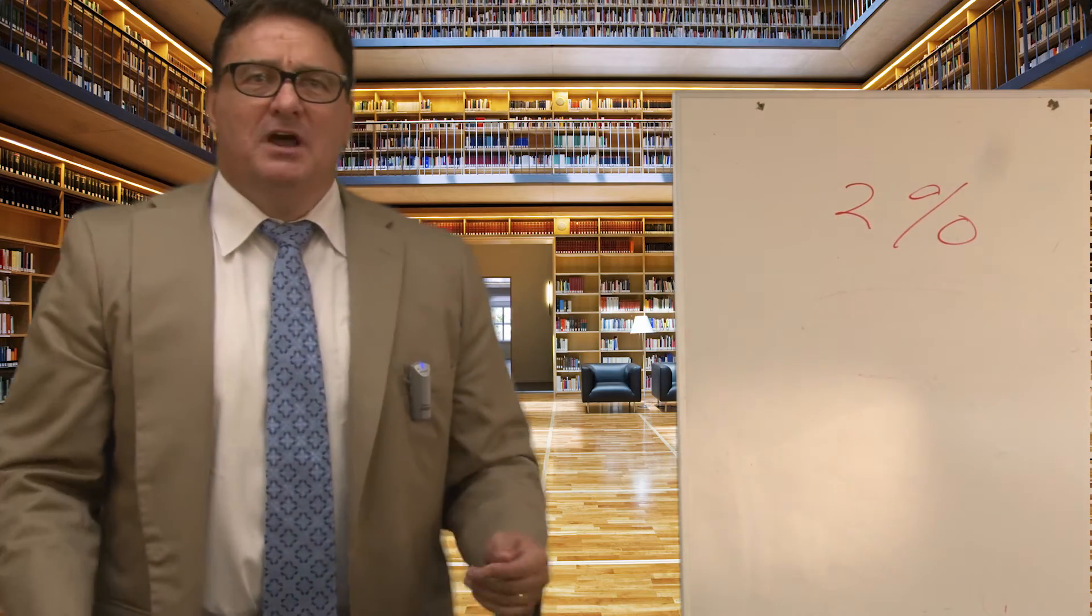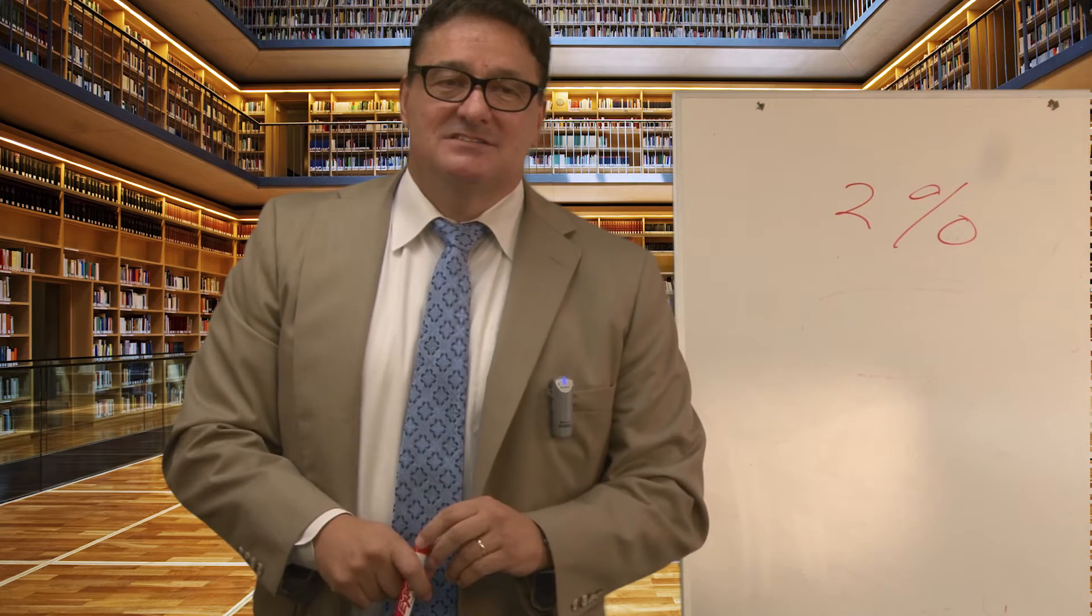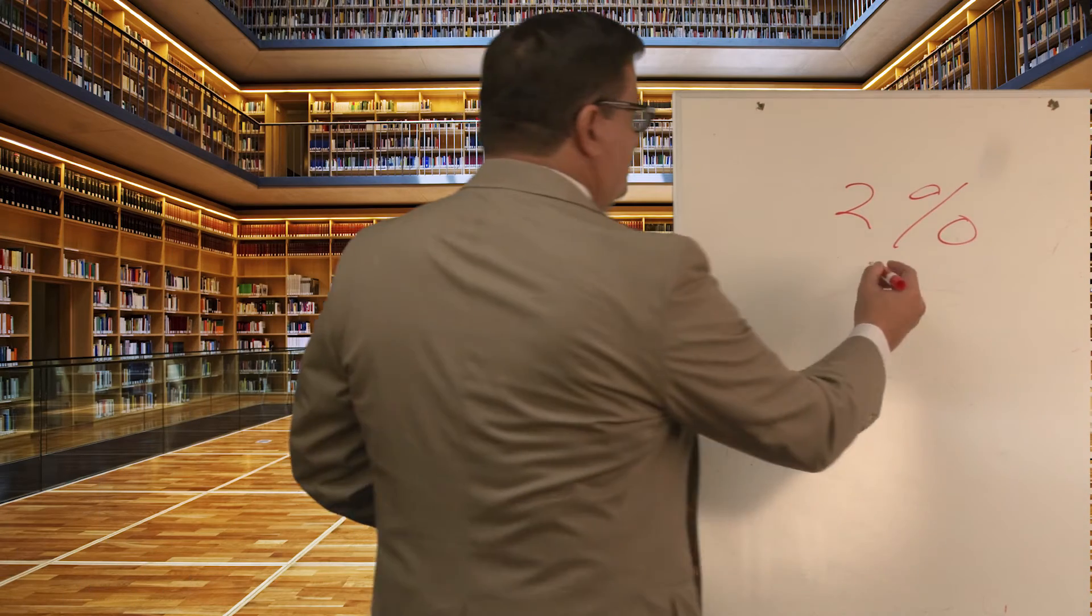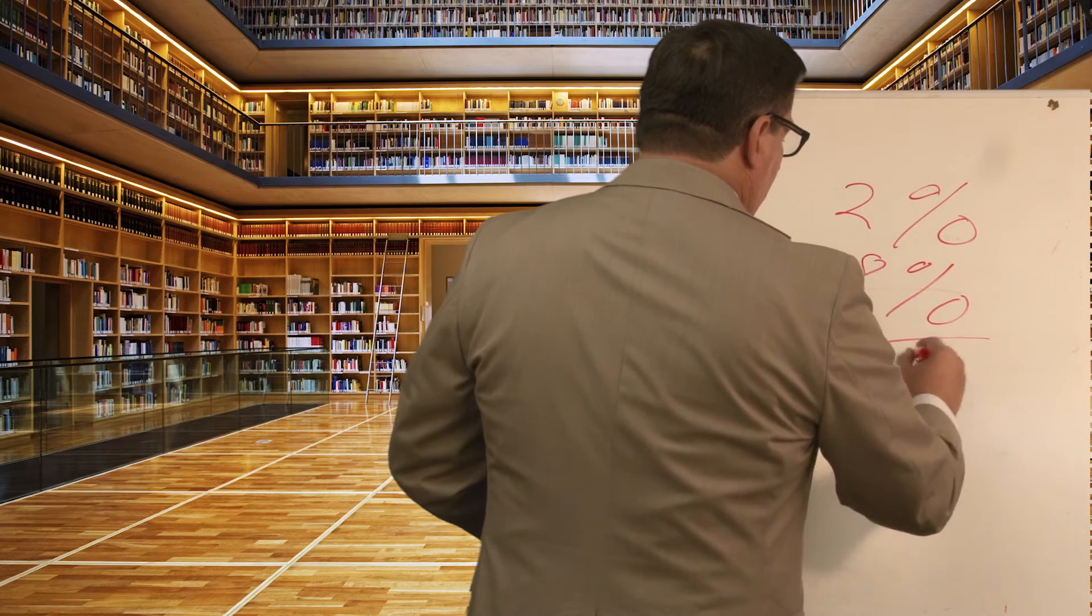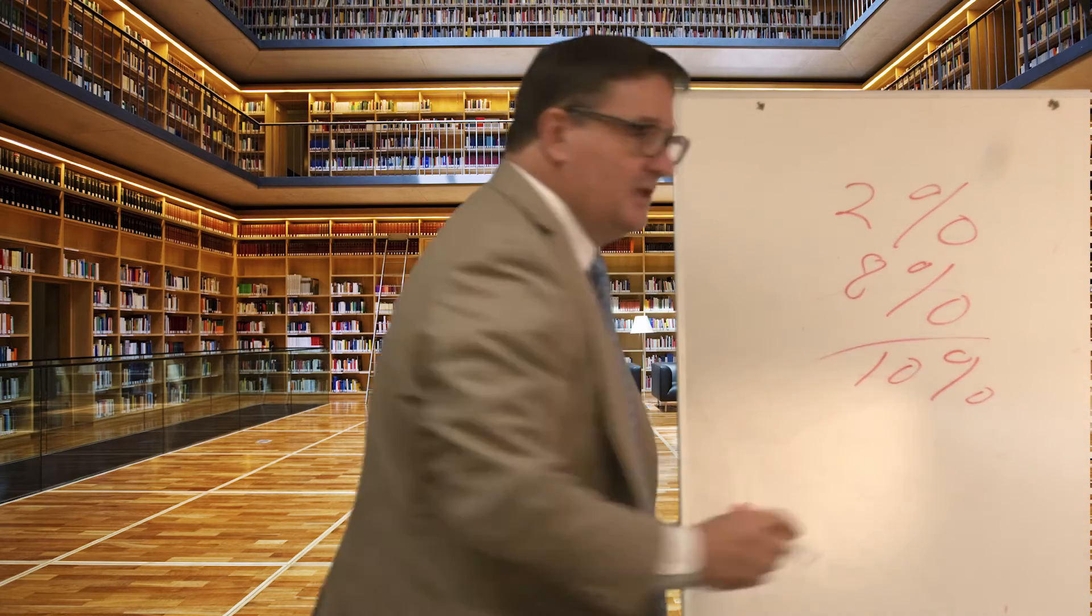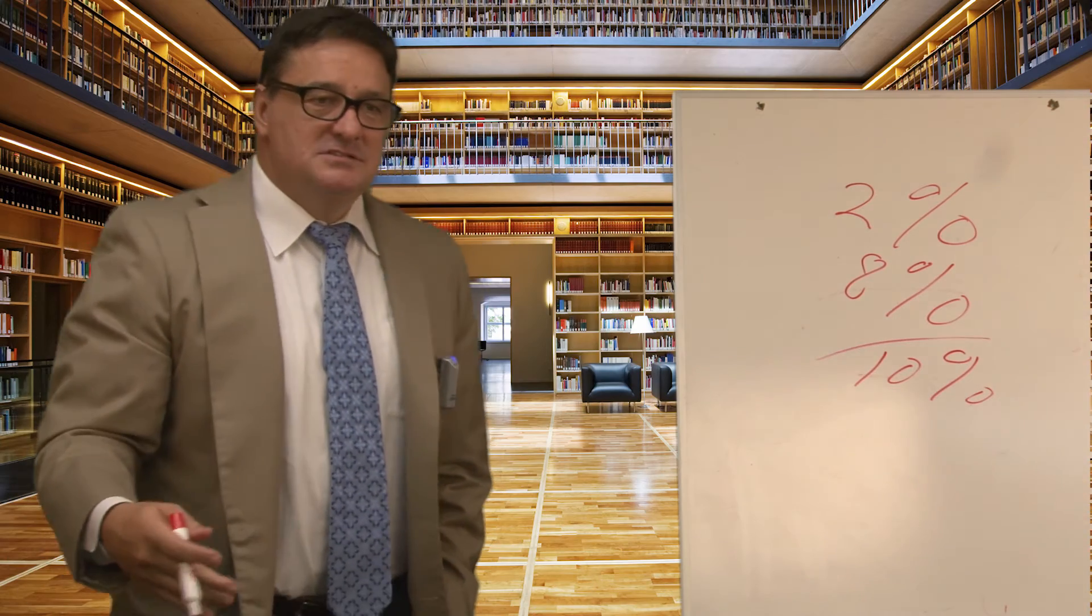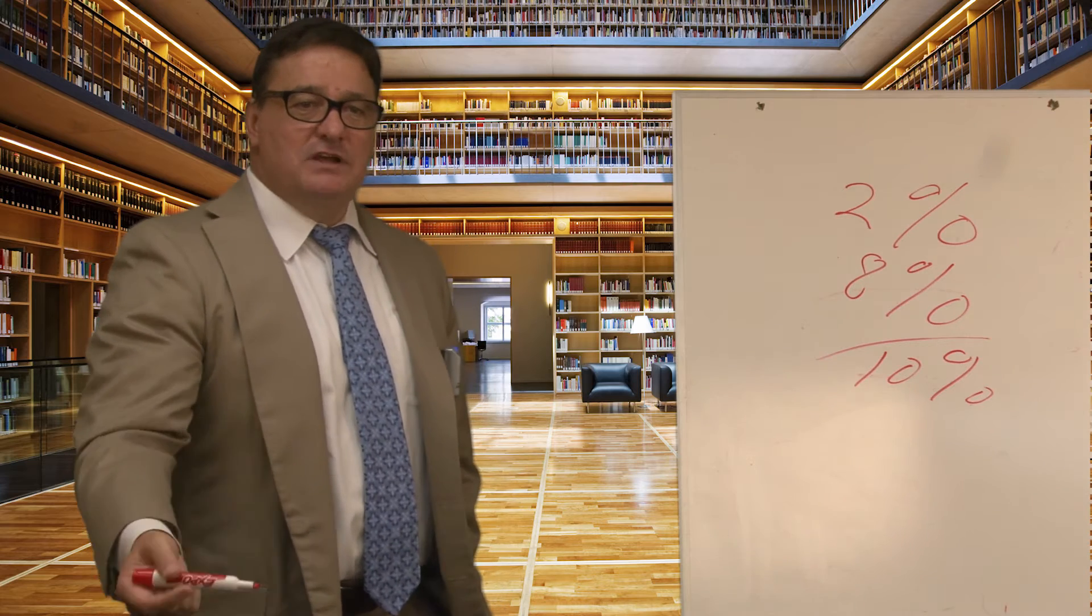But if I invest in an asset that's risky, I want more money. So we have the equity risk premium, which is usually 8%. So if I'm investing in stocks, I would expect a rate of 10%, because I want to be paid for my risk.